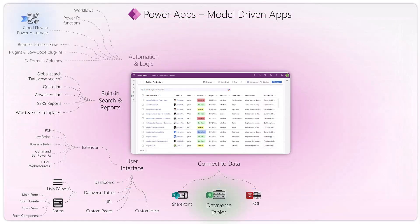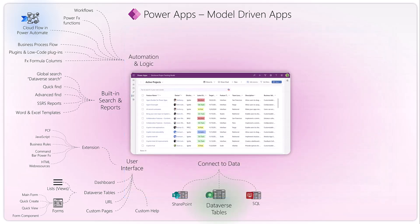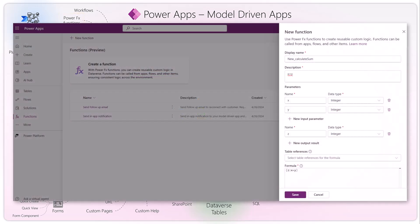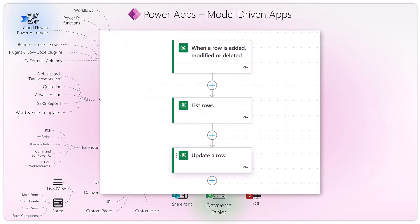Let's explore automation and logic. You have classic workflows — based on an event like creation or update, you can do something in the background. There are PowerFx functions, which is relatively new — you build logic that can be called from many places, with input and output parameters. You also have cloud flows in Power Automate — based on triggers you can do logic, conditioning, waiting, looping, and further actions.